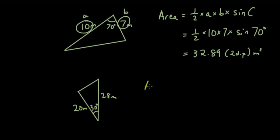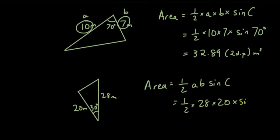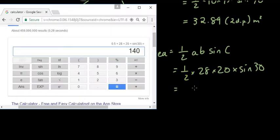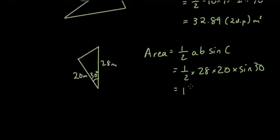Okay, so again, area equals half a b sine C. So that is simply half times 28 times 20 times sine 30. And just put all that into the calculator and you will get 140 meters squared. Make sure your calculator says degrees.